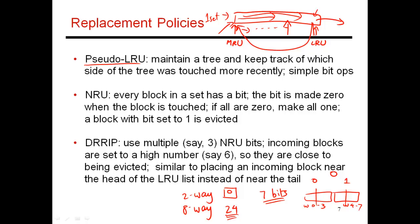There are other approximations as well. One example is NRU, which keeps one bit per block. Every time a block is touched, that bit is reset to zero, indicating it was recently touched and should not be evicted. If everybody is set to zero, all bits are reset to one. For a while eviction is random, but over time, as some blocks get touched again, you make a more refined decision and avoid evicting recently touched blocks.